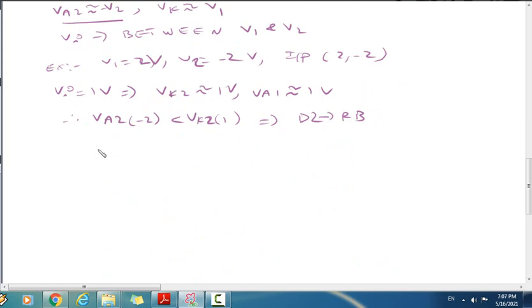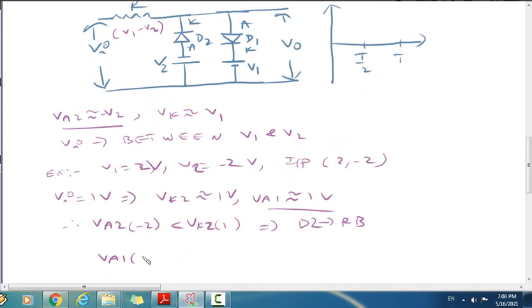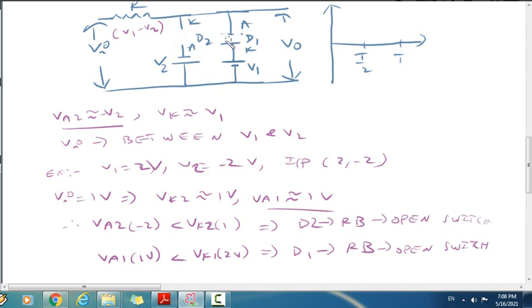Minus 2 is less than VK2 which is 1 volt, so diode D2 is reverse biased. VA1 of 1 volt is less than VK1 which is 2 volts, so diode D1 is also reverse biased. Both diodes act as off switches or open switches.